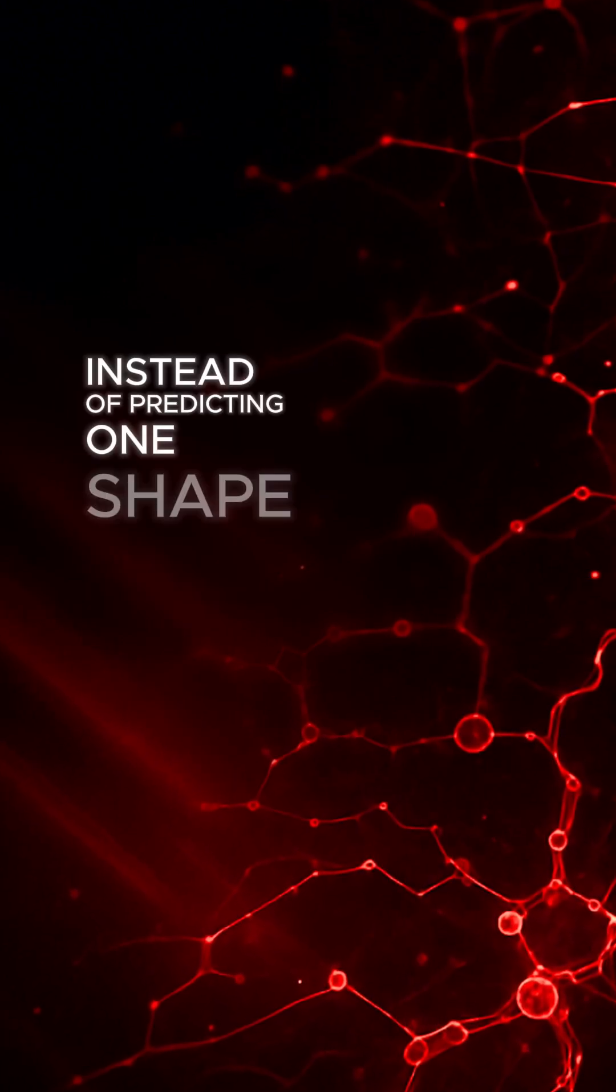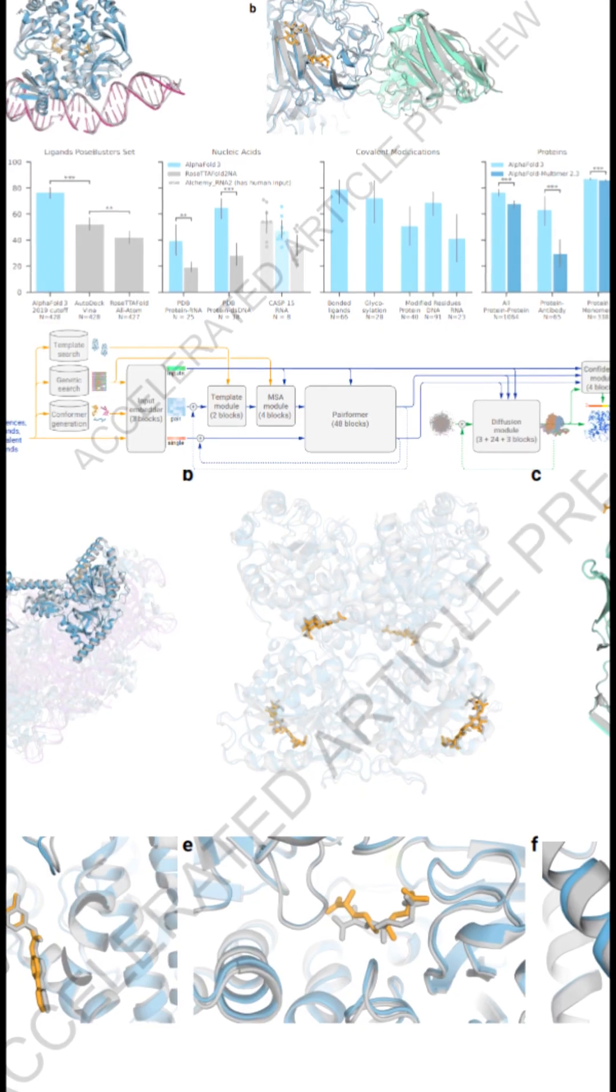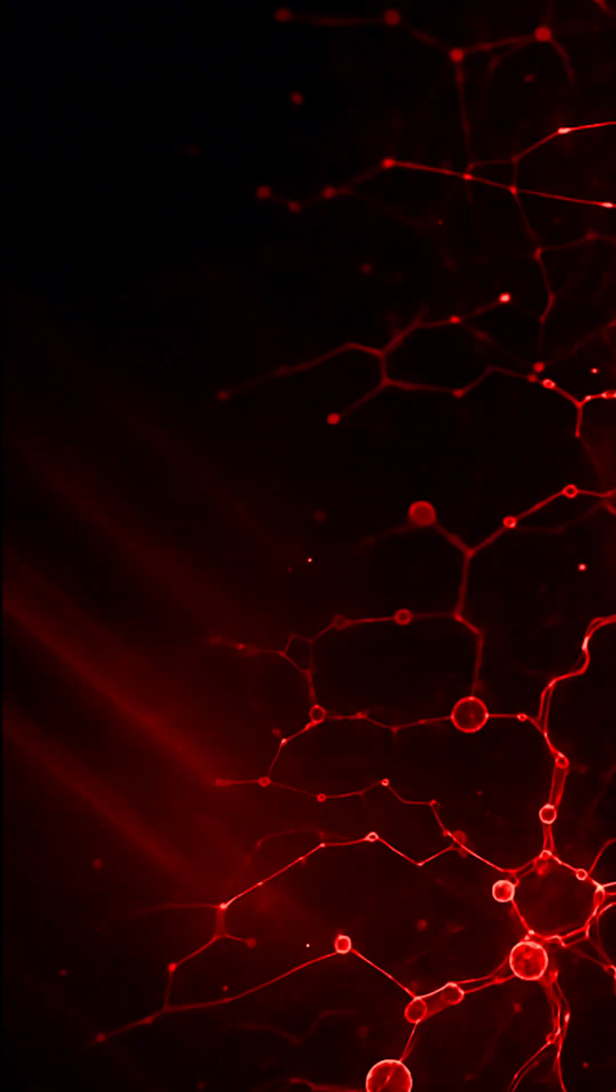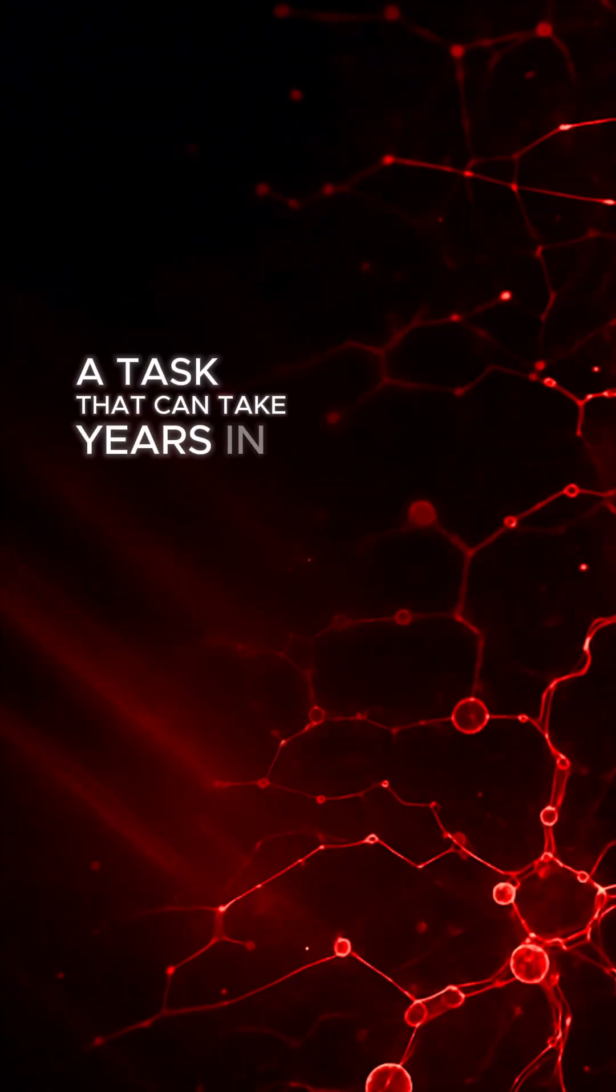Instead of predicting one shape at a time, AlphaFold3 can forecast how entire molecular systems are arranged. A task that can take years in traditional labs.